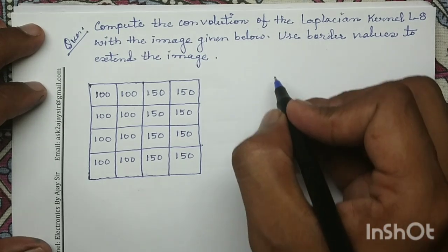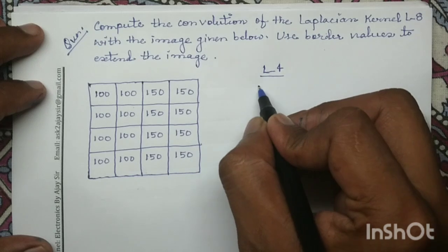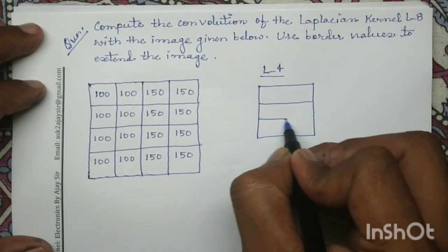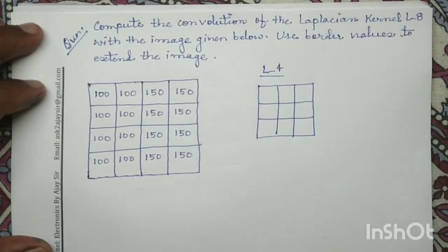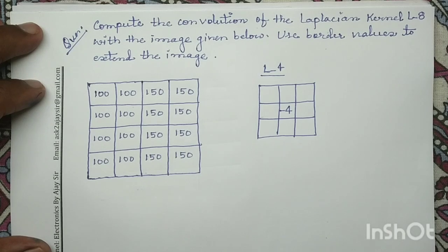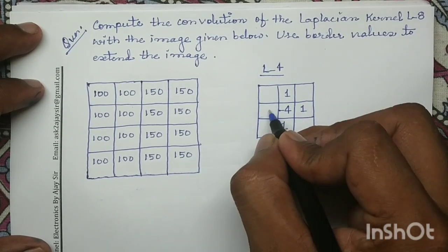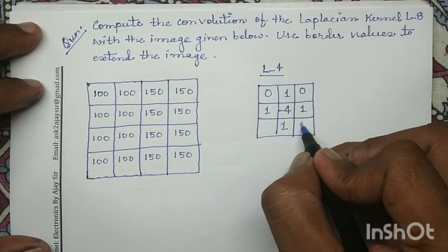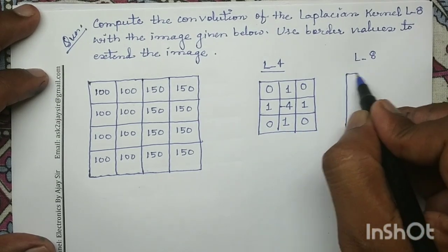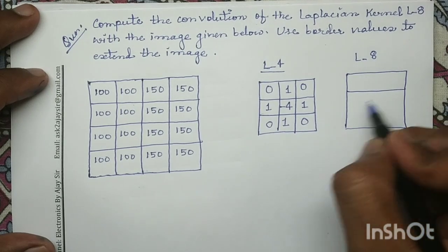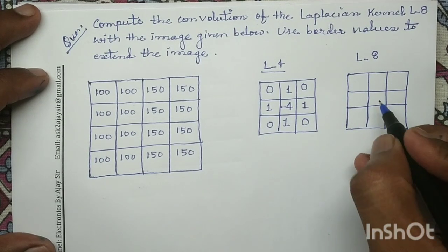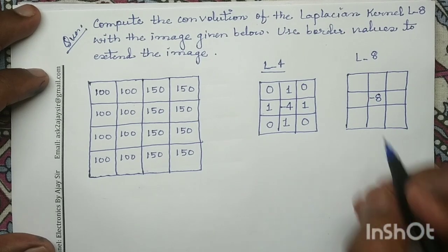The Laplacian mask is of two types. The first type is L4. In the Laplacian L4 mask, the center coefficient is minus 4, the 4 neighboring pixels have the coefficient 1, and the remaining elements are 0. The second mask is the Laplacian L8 mask. In the Laplacian L8 mask, the center element has the coefficient minus 8 and the remaining 8 elements have the coefficient 1.